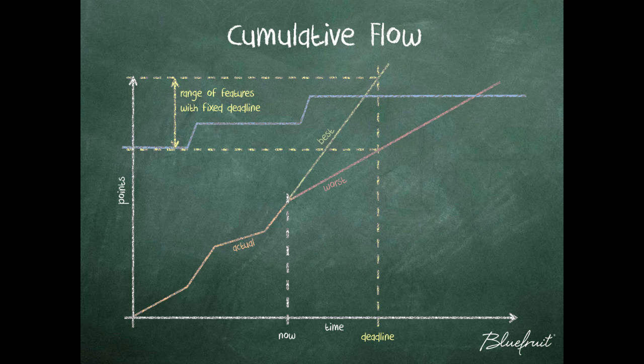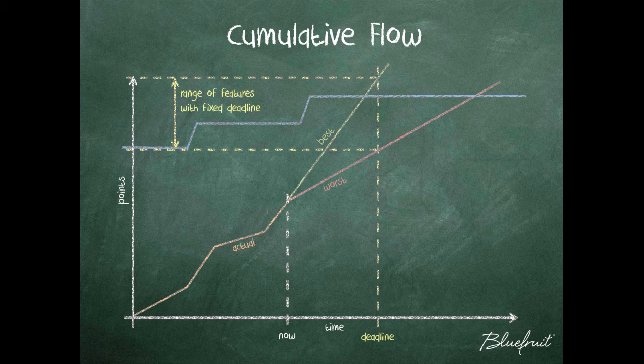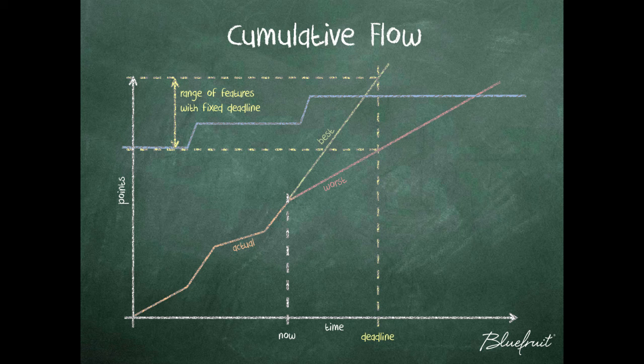So with a traditional Gantt chart, you may keep sliding the Gantt chart to the right as things slip, but you may not be tracking the way in which things are going slower than expected. Whereas cumulative flow is measuring the rate of error as well as the rate of progress.